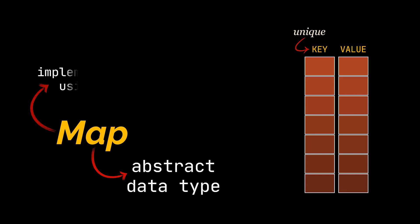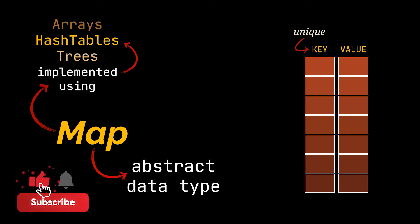The value can be anything from an integer to a string or a list or even another map. Most of the time they are implemented as hash tables with the help of arrays which we will discuss in a bit, and in some other cases they are implemented using binary or ternary trees which we will discuss in future videos.